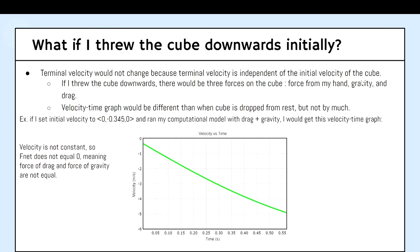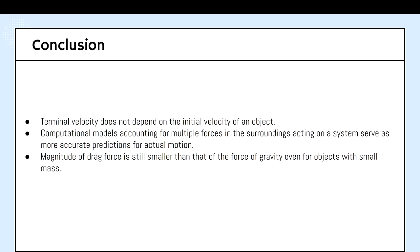So what if I threw the cube downwards initially? The terminal velocity will not change because terminal velocity is independent of the initial velocity of the cube. The velocity time graph would be different in this case than when the cube is dropped from rest, but not by much. If I set the initial velocity in the computational model with drag and gravity to negative 0.345 in the y direction, I will get this velocity time graph, which is not constant. So there is f net present, which means that the forces do not balance out.